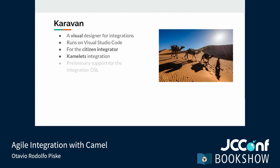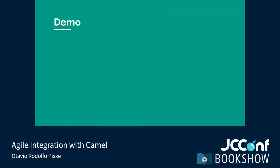Karavan is meant for the citizen integrator and users that don't want to write code using one of the DSLs. It integrates well with Camelets and uses them from the catalog. It also offers preliminary support for the integration DSL. Now let's go to the demo — I will show how to use CamelJBang to run some routes based on the YAML DSL, which can be used to prototype integrations before migrating them to more robust solutions such as CamelCore, CamelQuarkus, or CamelK.